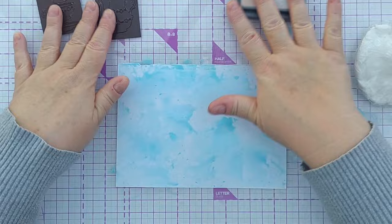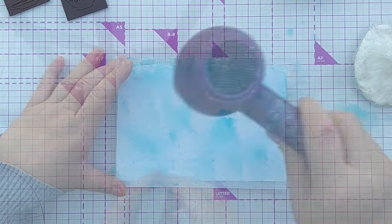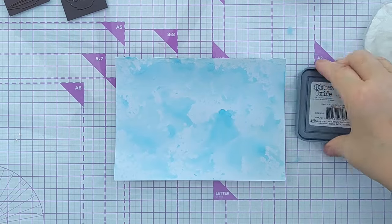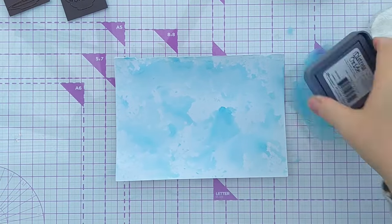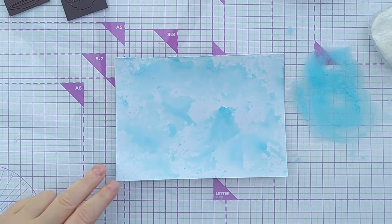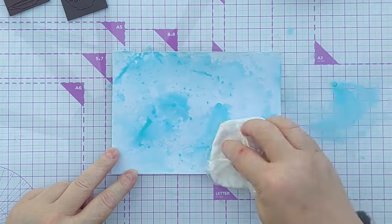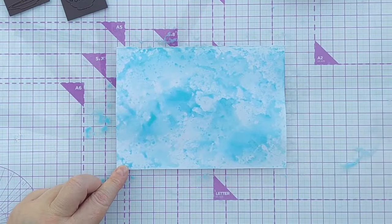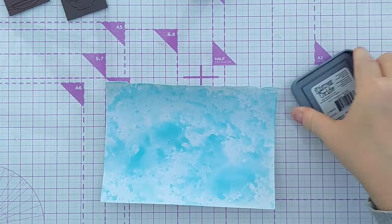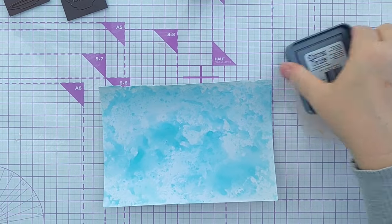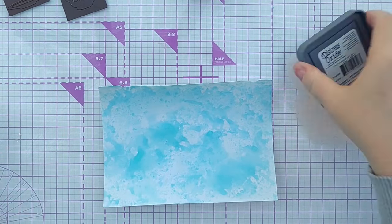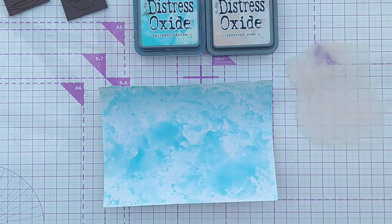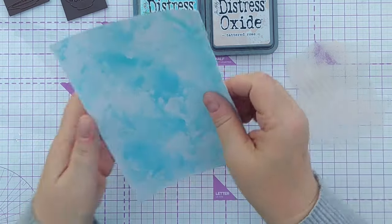And now I'm going to dry this with my hairdryer and I'm going to add another layer and lastly I'm going to add a layer of Tattered Rose Distress Oxide. These two colours together really give me a kind of Art Deco vibe, I think.